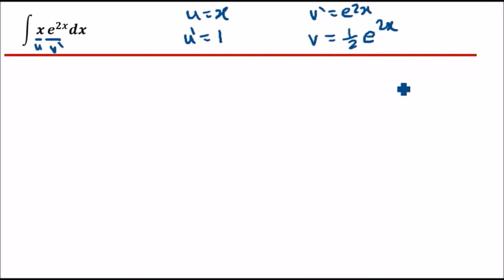Easy stuff. Now using the formula, the general formula is this: the answer is always going to be uv minus the integral of the first derivative of u times v. Easy stuff. So what do we have?